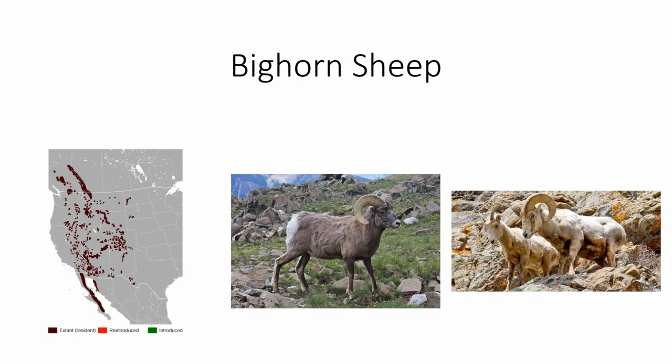The bighorn sheep, as opposed to the thin-horned sheep, is found all over the western United States and some of southwestern Canada, in rocky areas. They have brownish fur with a white rump, and of course the male has big horns while the female has smaller horns.